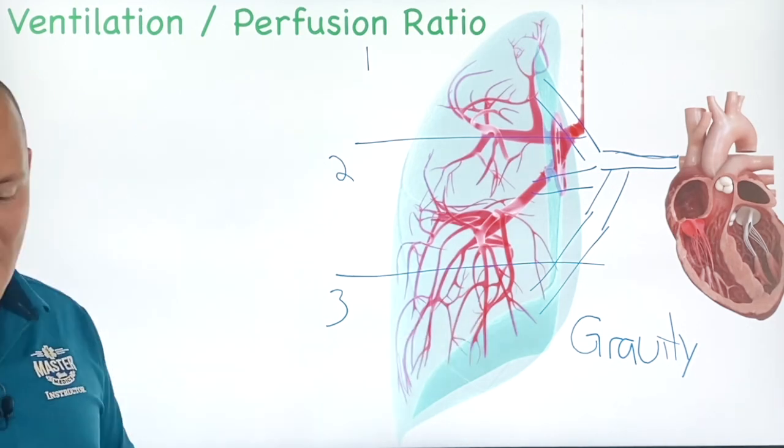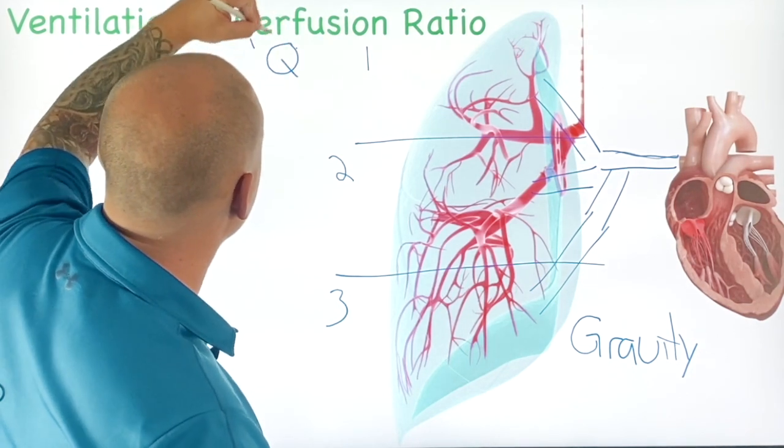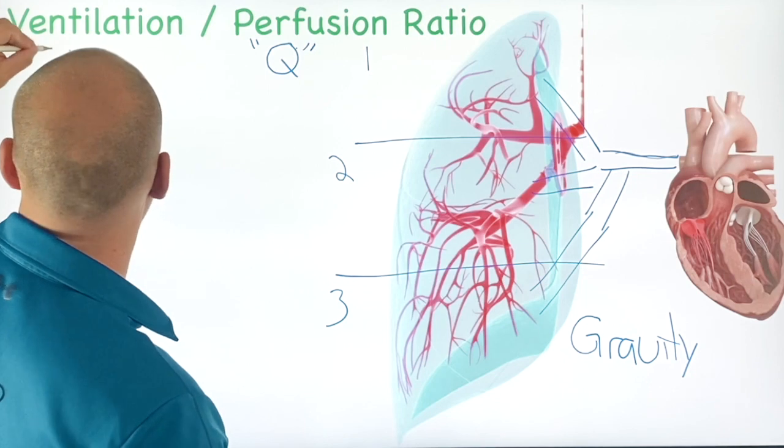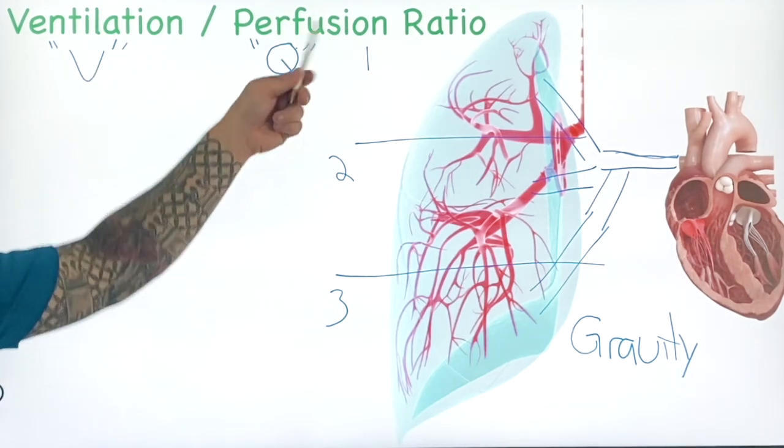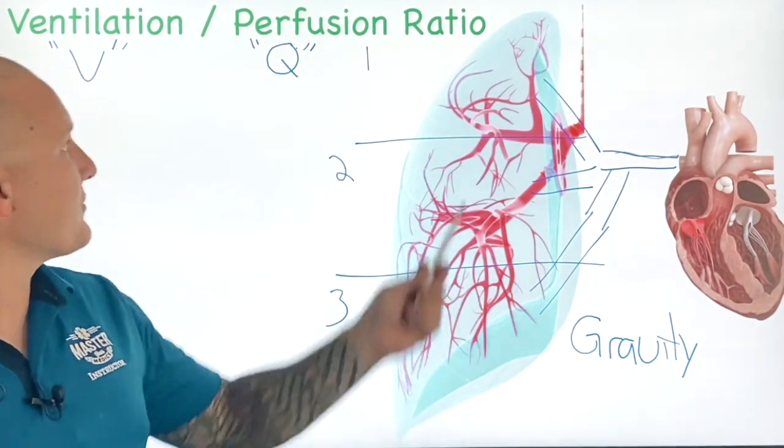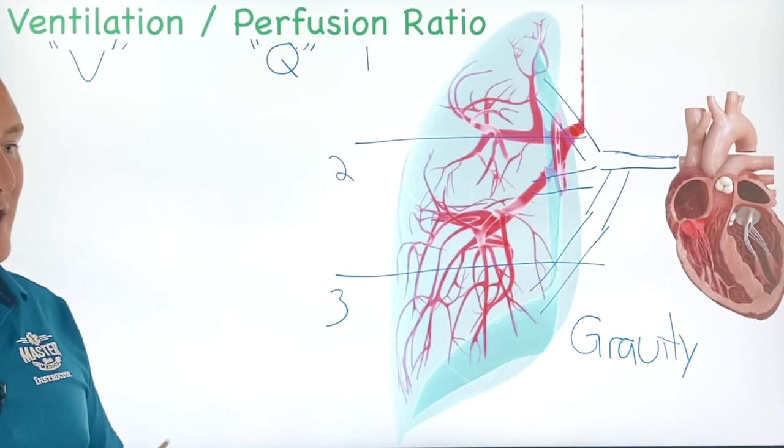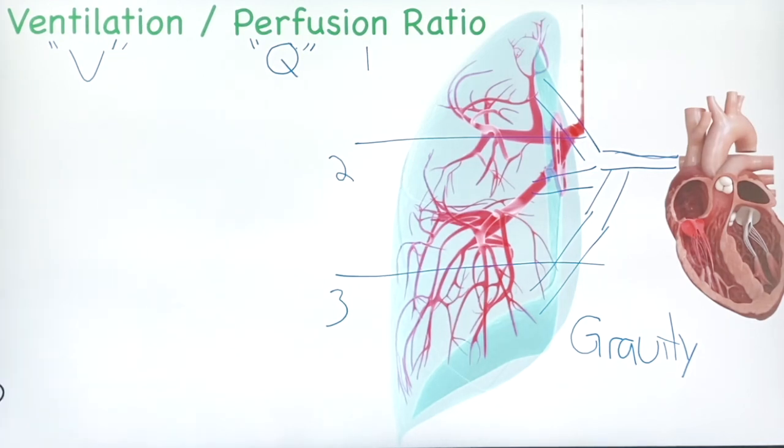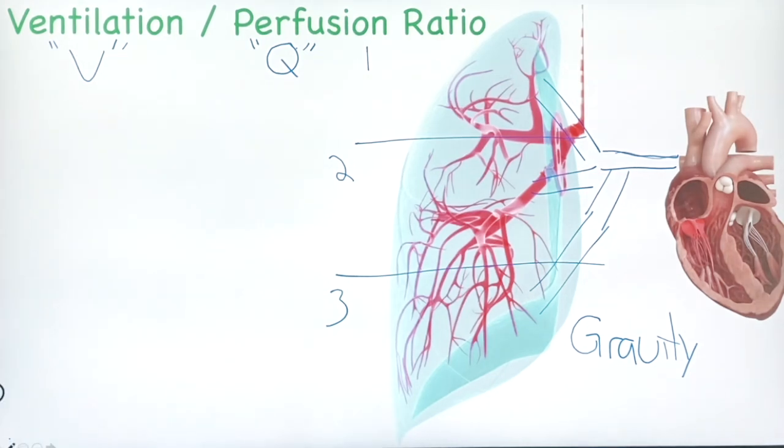That's the first part—we have more blood flow down here, which is the perfusion side. Perfusion is often referred to as Q, and ventilation is V. So when we talk about V/Q mismatches, we're talking about ventilation-perfusion mismatches. That's what this V/Q ratio is. That's the gravity part, the perfusion side here.